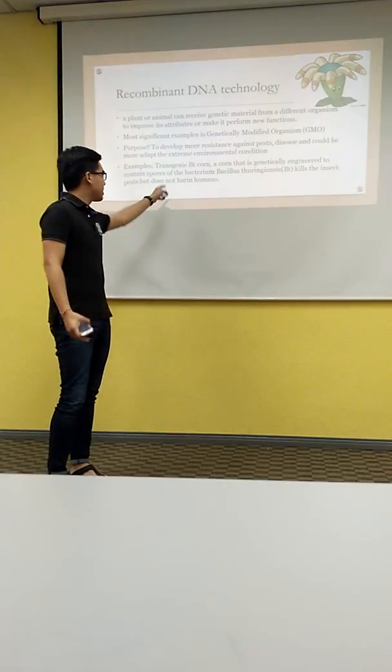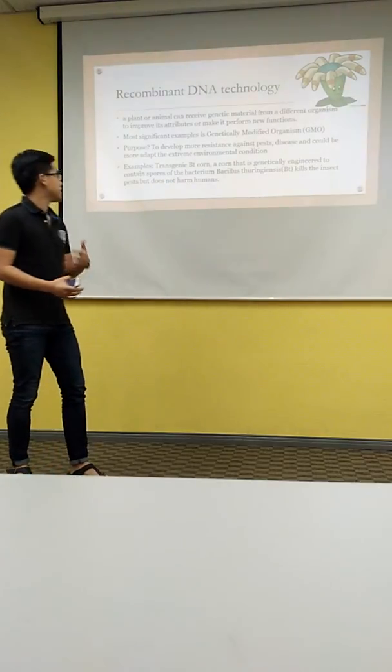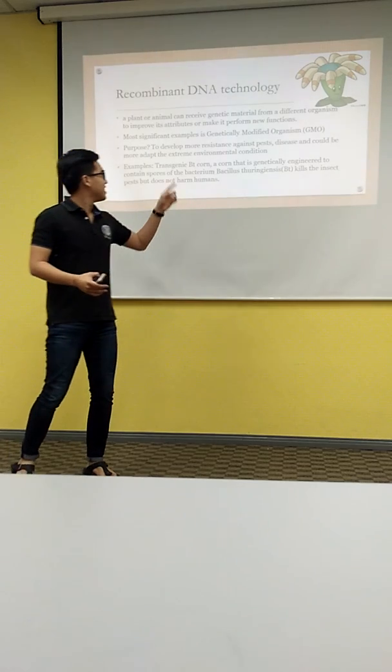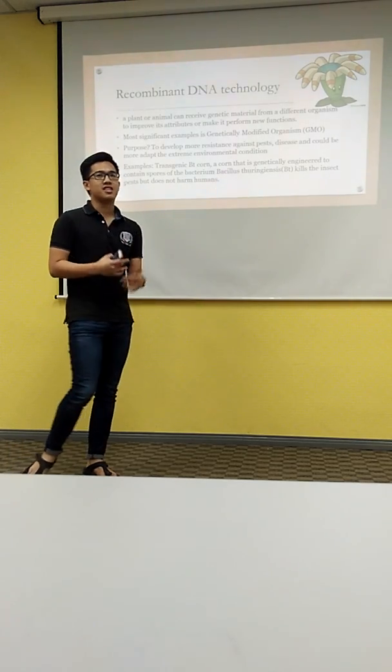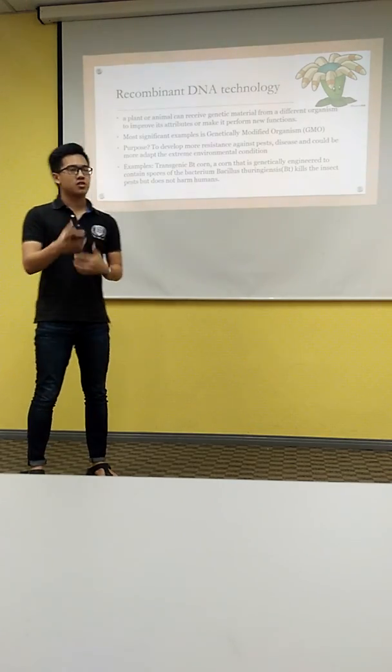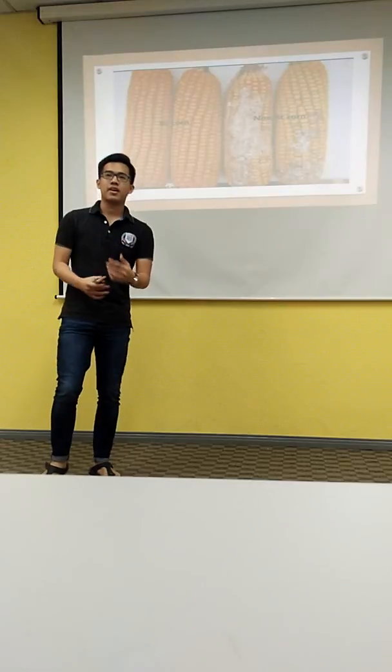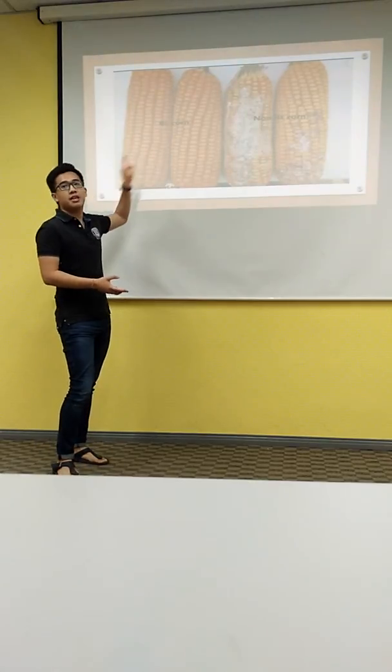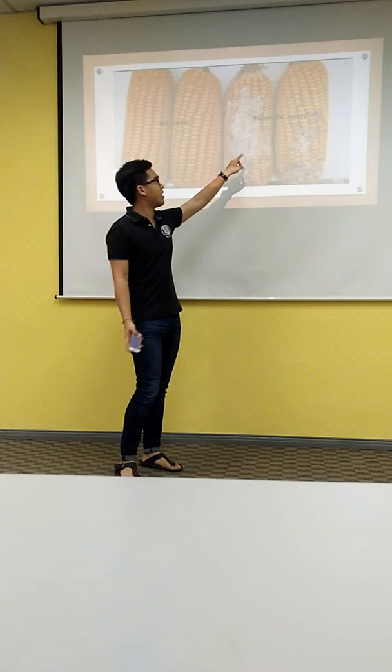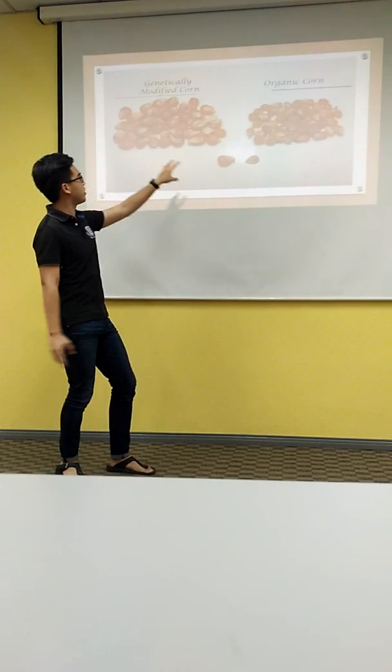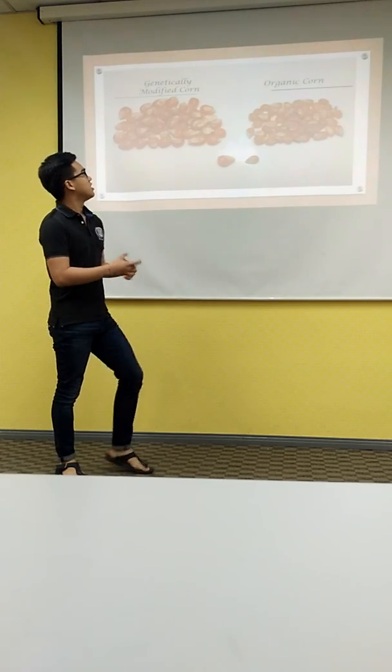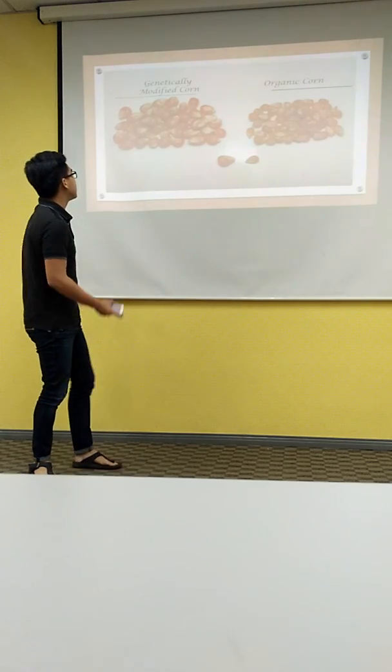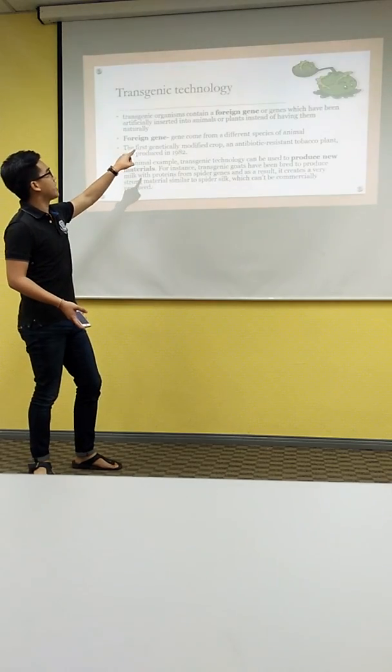For example, the transgenic Bt corn is corn that is genetically modified to contain the spores of the bacterium named Bacillus thuringiensis, Bt in short form, which kills the insects that invade the corn. So the corn would stay fresh quite a long time and can be sold at quite a high price. This is the example of Bt corn, the genetically modified corn, and the original corn without any genetic modification. As you can see the difference, the genetically modified corn is quite fresh compared to the organic corn, which is quite small and not fresh. Next, this is the tomato, the organic tomato and the GMO tomato.